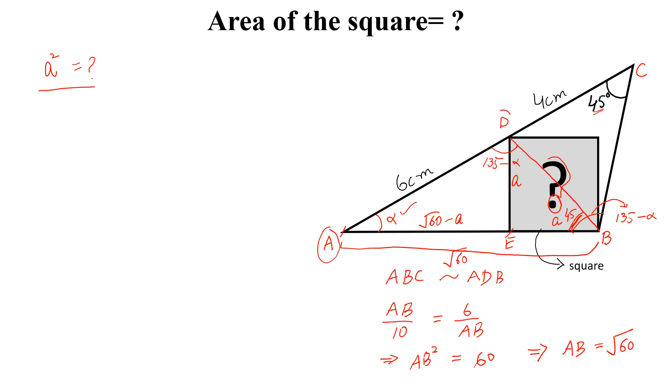And if this is a right angle triangle, so we can write A squared plus square root of 60 minus A whole squared equal to 6 squared.